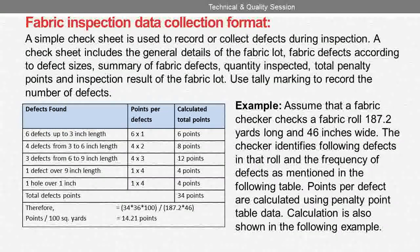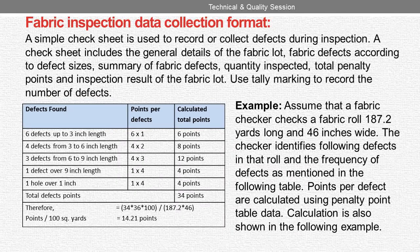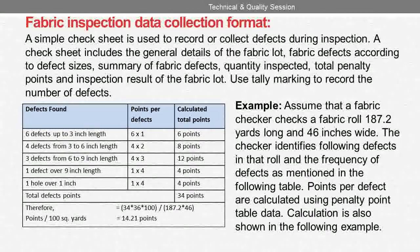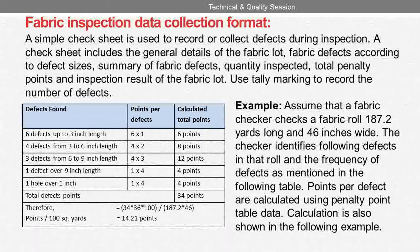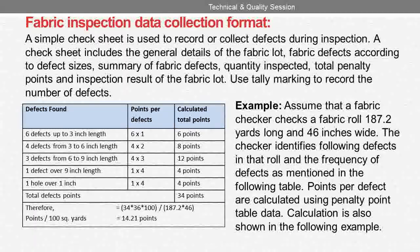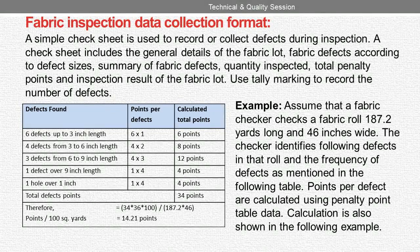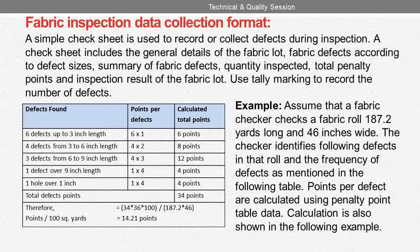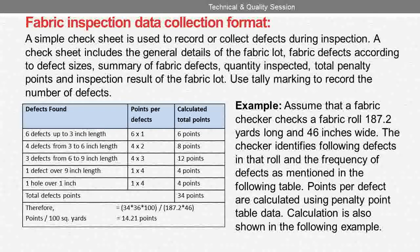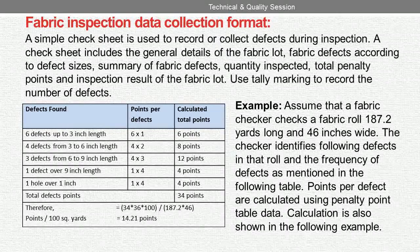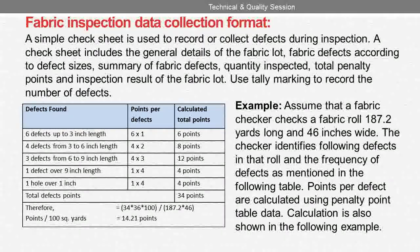Example: assume that a fabric checker checks a fabric roll 187.2 yards long and 46 inches wide. The checker identifies the following defects in that roll, with the frequency of defects as mentioned in the following table. Points per defect are calculated using the penalty points table data, and the calculation is also shown in the following example.